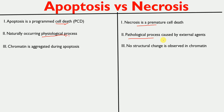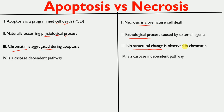In apoptosis, chromatin is aggregated during the process, whereas in necrosis, no structural change is observed in chromatin. Apoptosis is a caspase-dependent pathway — caspase is an enzyme that apoptosis depends on — whereas necrosis is a caspase-independent pathway.